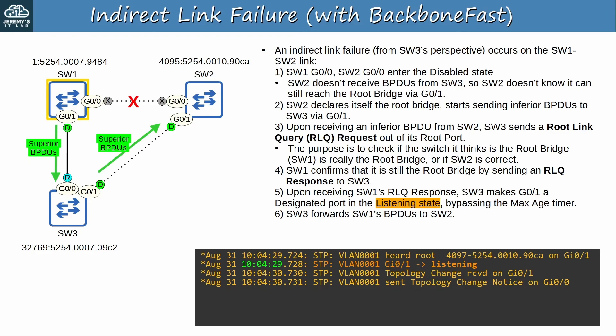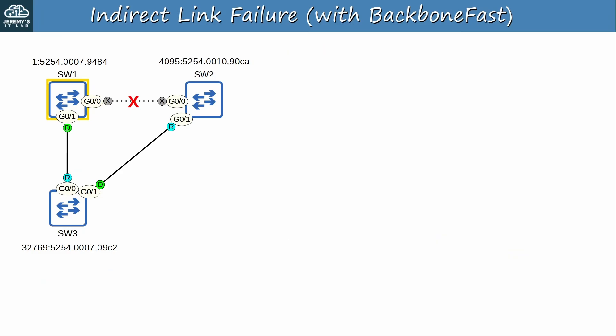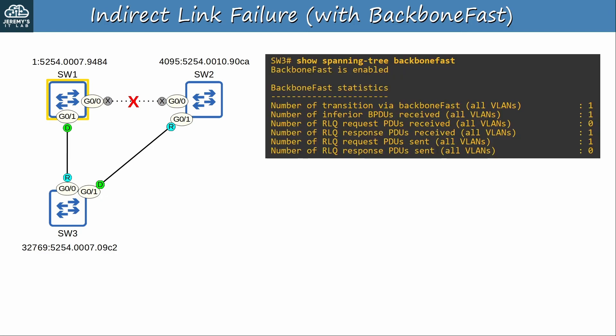The rest of the process is the same. Now that SW3 is designated, it forwards SW1's BPDUs to SW2, and SW2 accepts SW1 as the root bridge again, making G0/1 its root port. SW3 proceeds through the learning state for 15 seconds and reaches the forwarding state — so 30 seconds of downtime. BackboneFast allowed SW3 to quickly confirm SW2 was wrong in claiming to be root, then SW3 informed SW2 that SW1 is still the root bridge, skipping the max age timer. We can confirm after the fact with 'show spanning-tree backbonefast' — unfortunately the debug command isn't available in these CML switches.